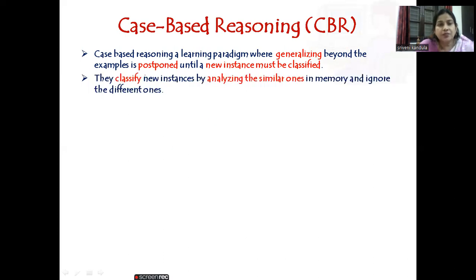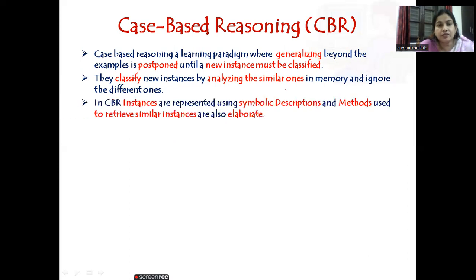In CBR, new instances are classified by analyzing similar ones in memory and ignoring the different ones. Instances are represented using symbolic descriptions and methods. These methods are used to retrieve similar instances and are also used to elaborate.